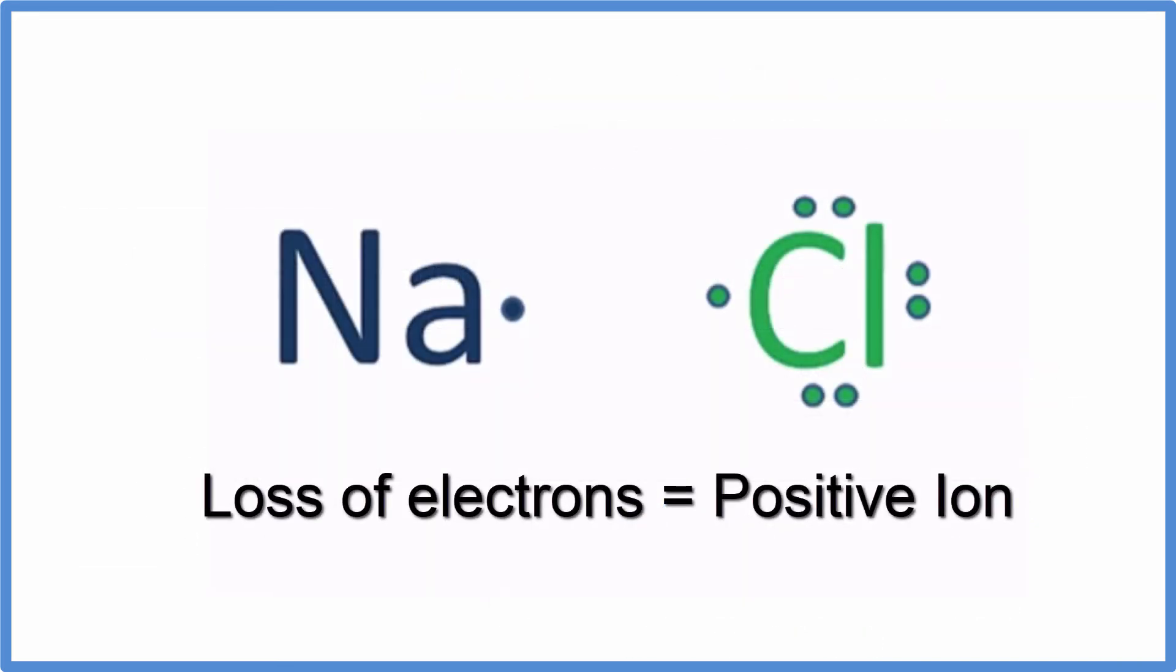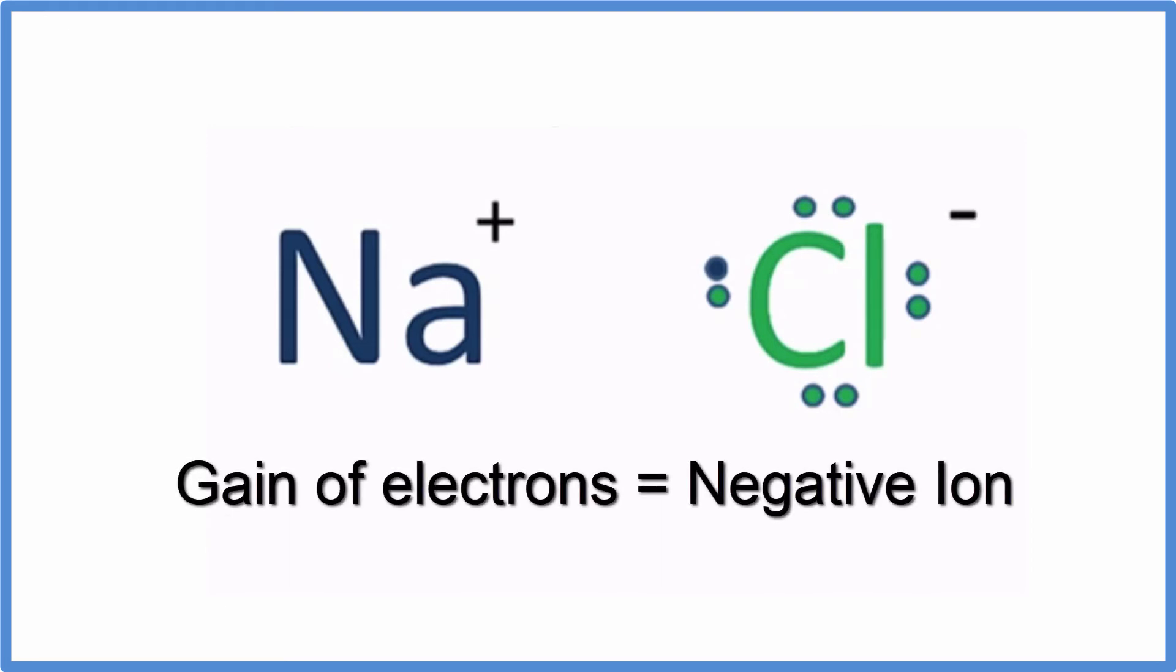It's important to understand that when an atom loses an electron, negative charge, it becomes positive. The atom that receives that electron gets the negative charge and becomes a negative ion.